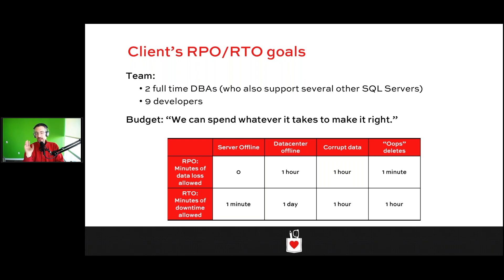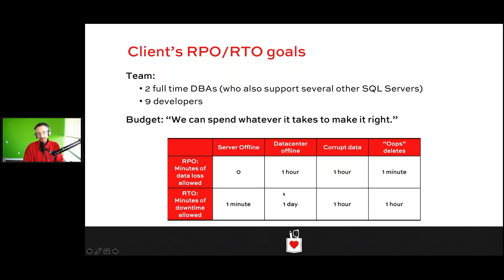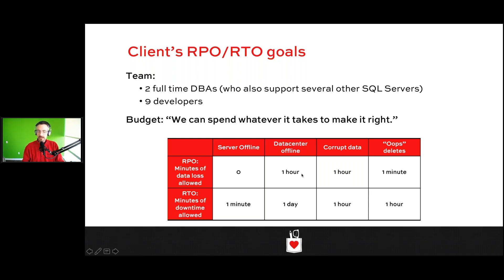These guys are willing to spend whatever it takes to make it right — if you needed to spend half a million dollars, they probably wouldn't blink. Their goals: they don't want to lose any data at all in the event of a server going offline, and they want automatic failover within one minute. If they lose a data center, they already have a secondary data center available — you don't have to go build one. They'd like to lose no more than one hour's worth of data and be down for no more than one day if they lose their primary data center. That one day is luxurious enough to allow some manual failover processes.